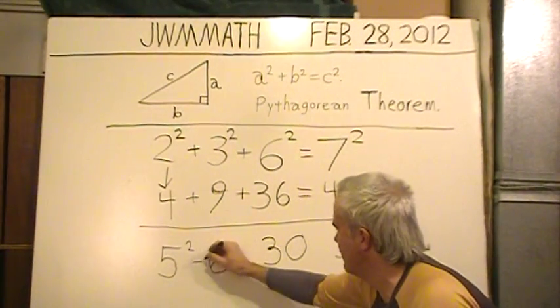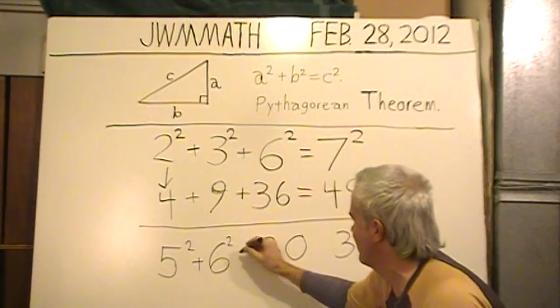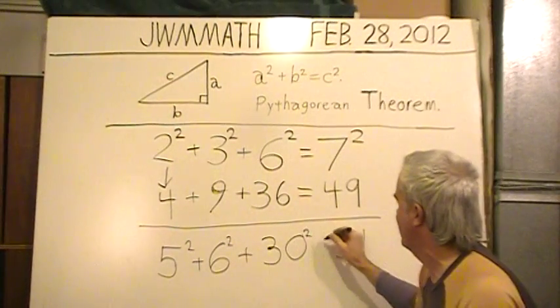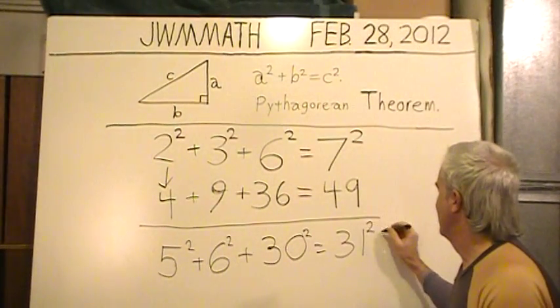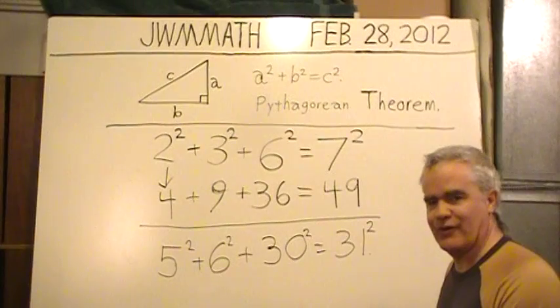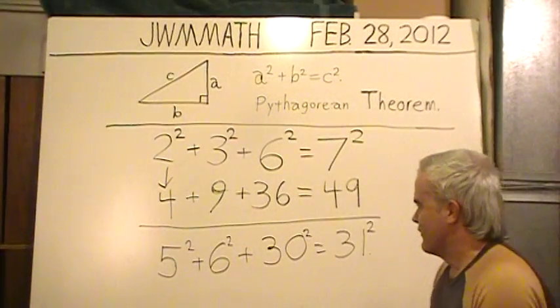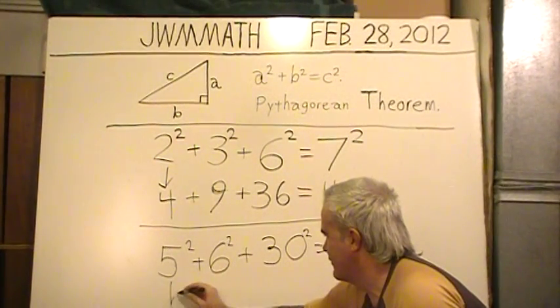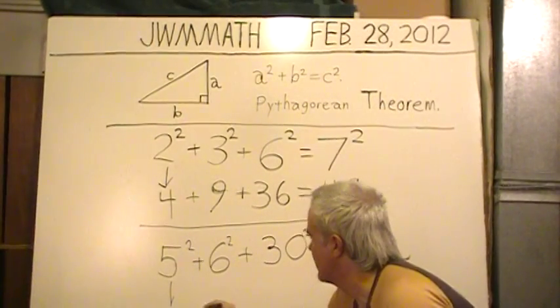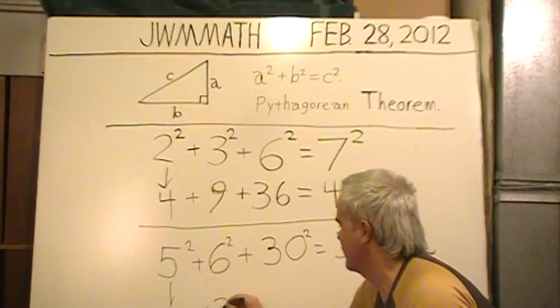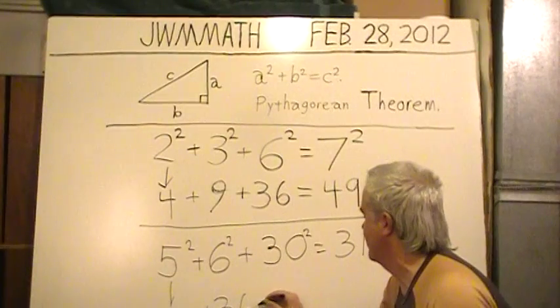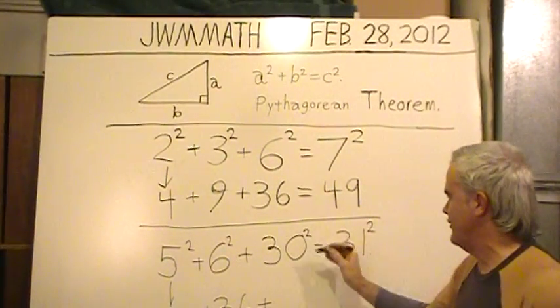And I'm claiming five squared plus six squared plus 30 squared equals 31 squared. Okay, so we have five squared is 25, six squared is 36, 30 squared, that's also very easy, is 900.